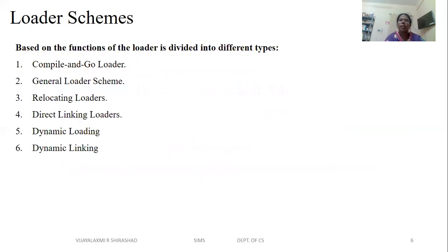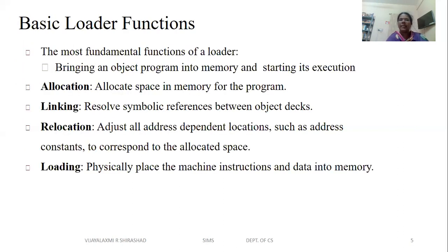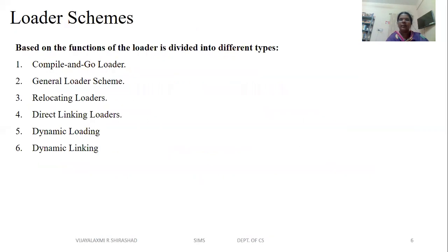Based on the functions of allocation, linking, relocation, and loading, loaders are divided into different types: compile and go loader, general loader scheme, relocating loader, direct linking loader, dynamic loading, and dynamic linking. We will study each one by one.